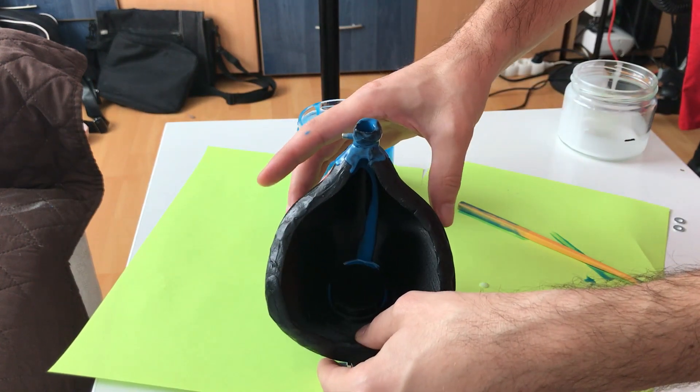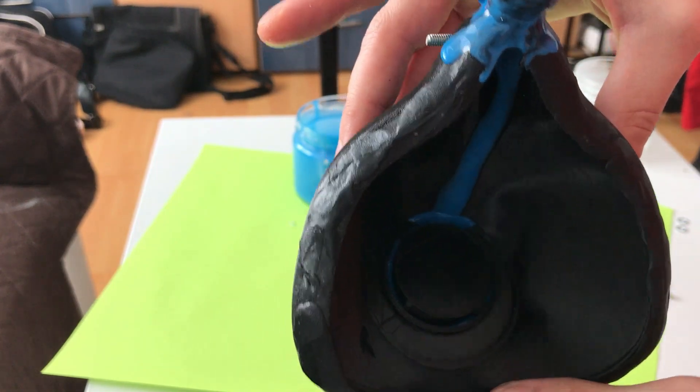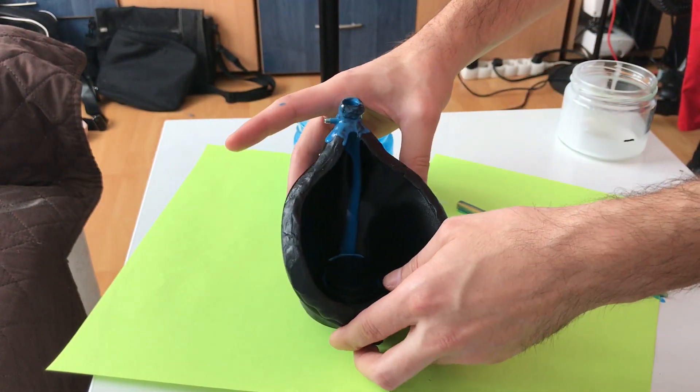Just before the silicone starts spilling out from the unclosed lower part of the mold, I close it with the threaded cap and continue pouring until the mold is full.